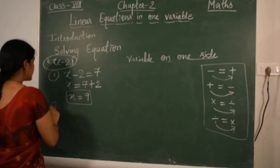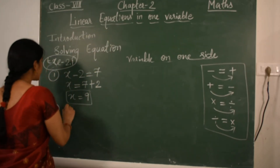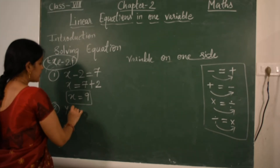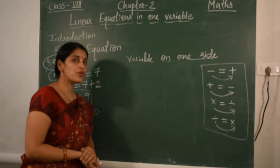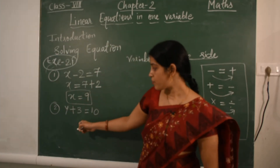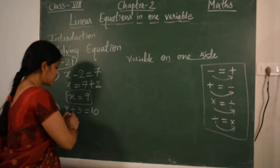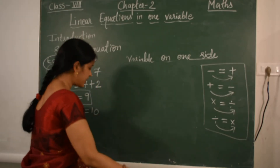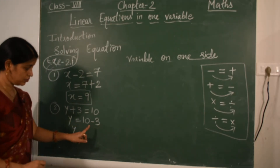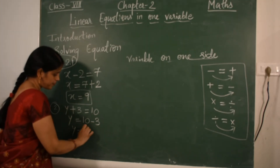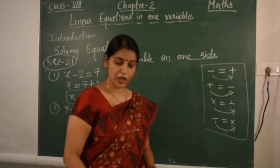Second question: y plus 3 equals 10. The sign of the constant is plus 3. When transposed to the right-hand side, plus 3 changes to minus 3. So y equals 10 minus 3, which is 7. So y equals 7 is the answer.